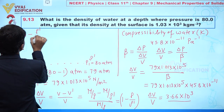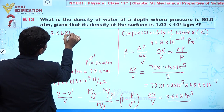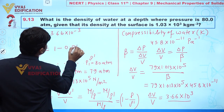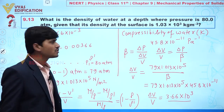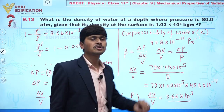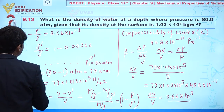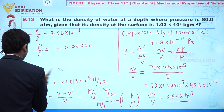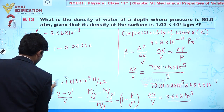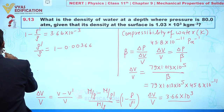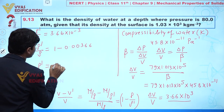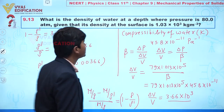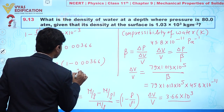From 1 − ρ/ρ' = 3.66 × 10⁻³, we get ρ'/ρ = 1 − 0.00366. The density at the surface ρ is given as 1.03 × 10³ kg/m³, so ρ' = ρ × (1 − 0.00366).